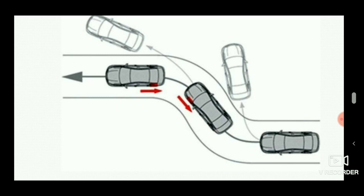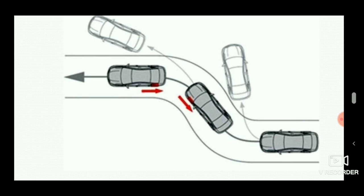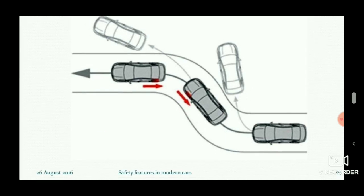After completing the turn, ESC applies the back-left side brake so the vehicle continues in a straight path. This is how ESC safeguards the driver from moving the vehicle off the road — it senses the driver's movement, calculates the data, and applies brakes to the particular wheel to avoid fishtailing and prevent accidents.